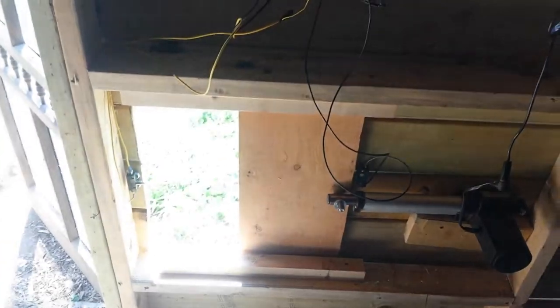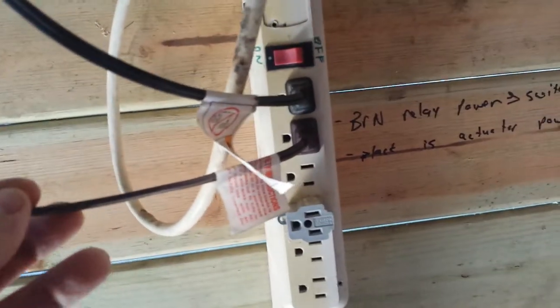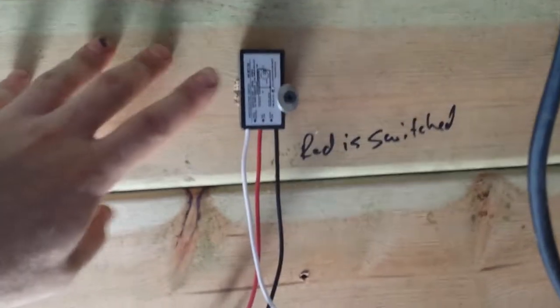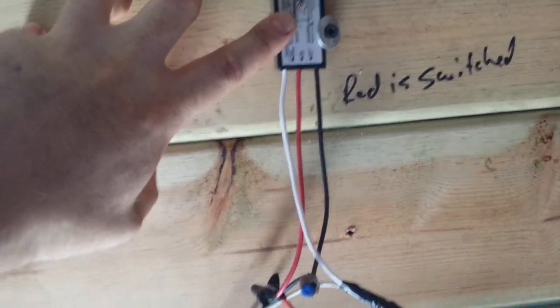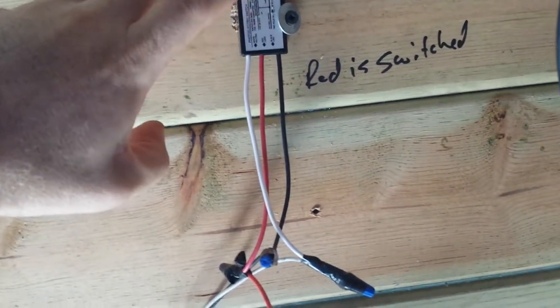Here is my photo eye controlled chicken door. Let's start with the AC power. This brown wire goes from 110 to the photo eye. Power goes in here, and the photo eye says closed or open.